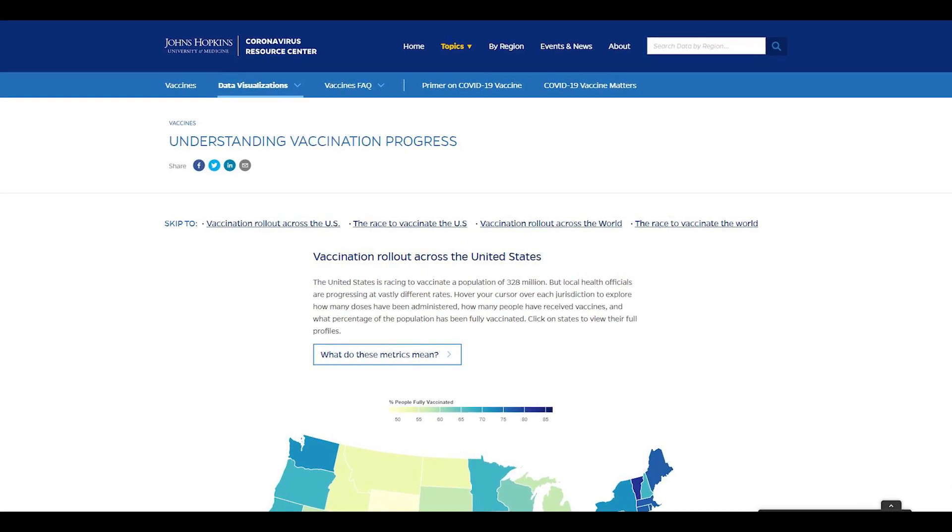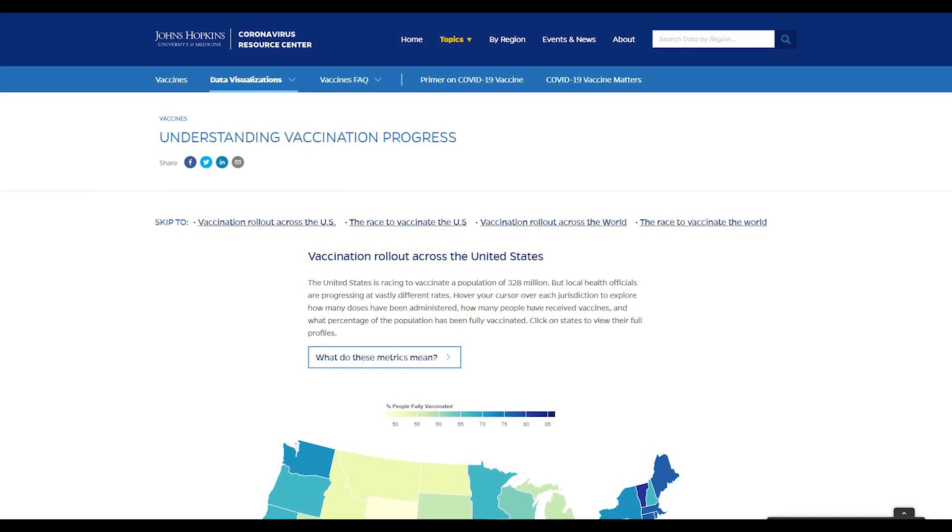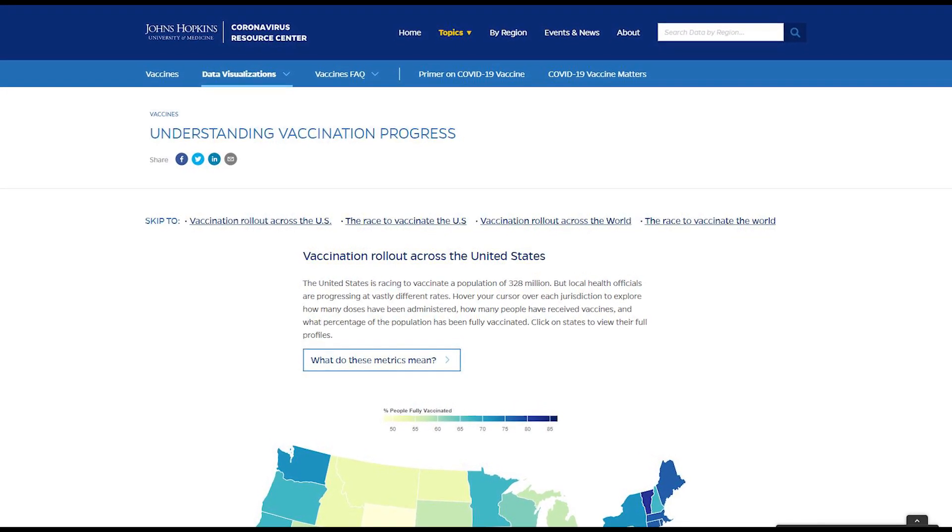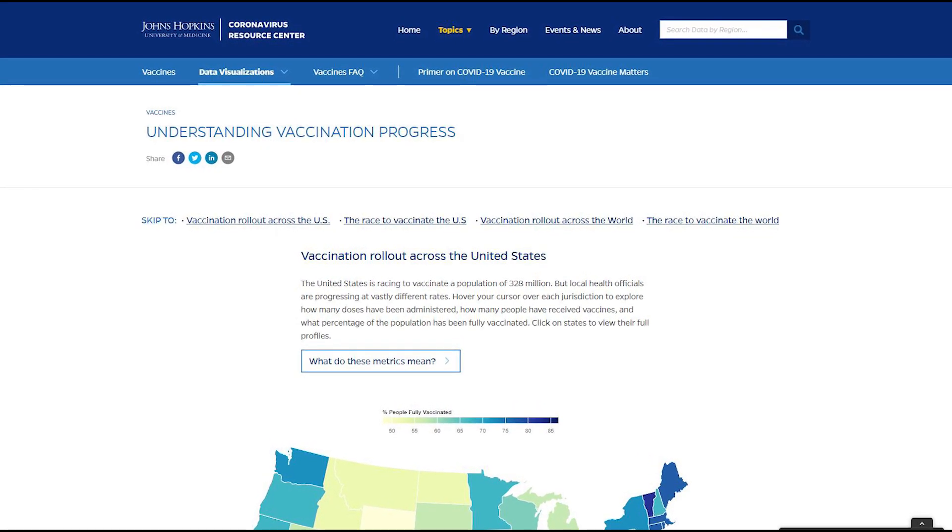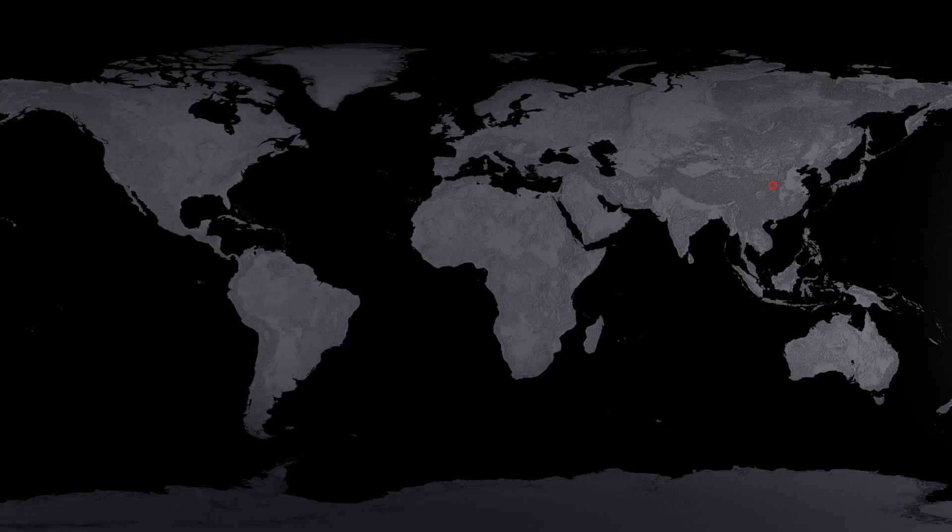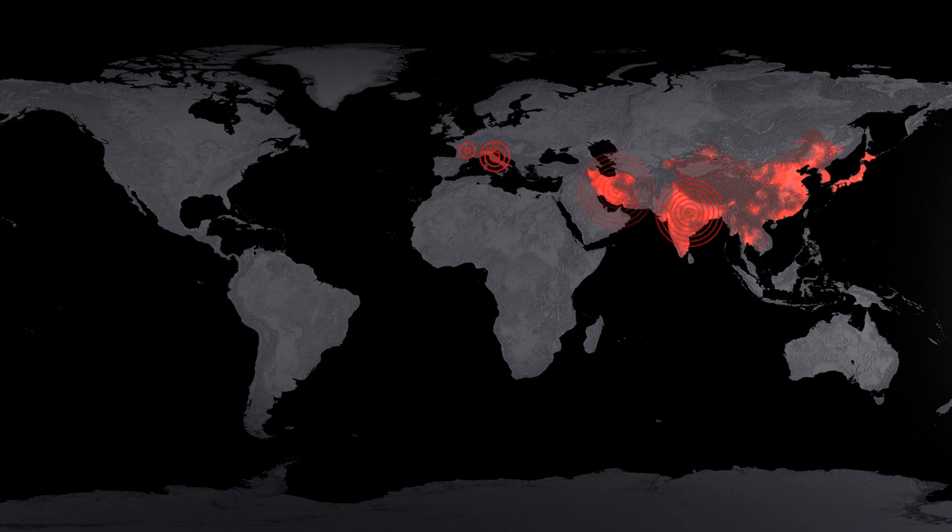According to Johns Hopkins Coronavirus Resource Center, many countries remain below 50% of fully vaccinating their population. Included are Indonesia at 15.1% fully vaccinated, Madagascar at 2.8%, Sudan at 2.9%, Iraq at 15.5%, and Venezuela at 40.7%.